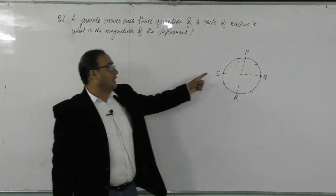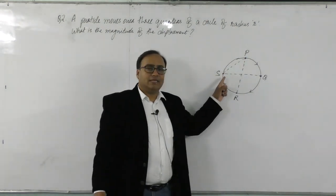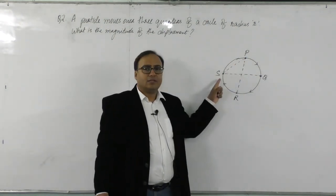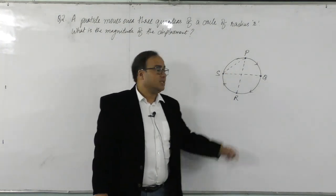And this straight line path, shortest straight line path, initial position tha P, final position S, the shortest path is PS. We have to find out the value of PS and that will be the displacement.